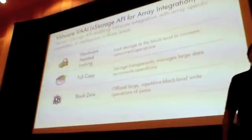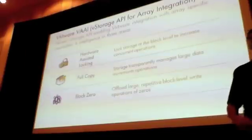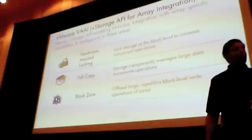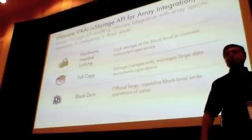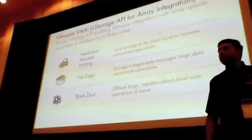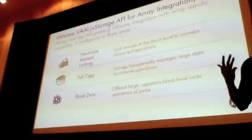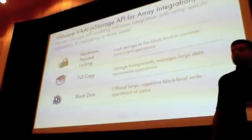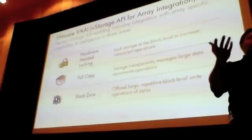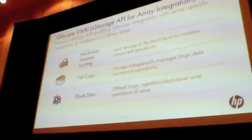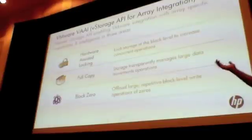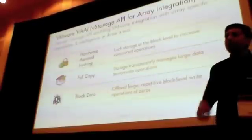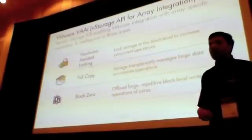Starting in vSphere 4.1, VMware introduced a couple of unique capabilities that storage can take advantage of, coined under the umbrella VAAI — VStorage API for Array Integration. In vSphere 4.1 they have three unique capabilities: hardware-assisted locking, full copy, and block zero. Typically every storage vendor implements these — any storage vendor who claims VAAI integration has these capabilities. Even then, 3PAR's implementation is very unique across all three. Let's take hardware-assisted locking as an example.